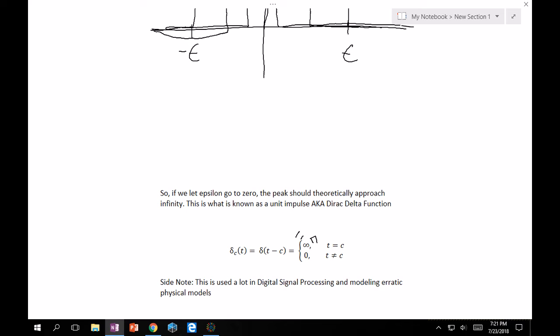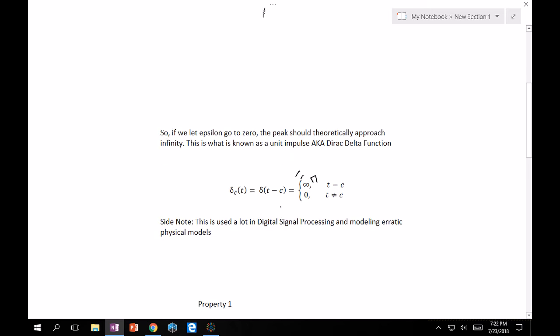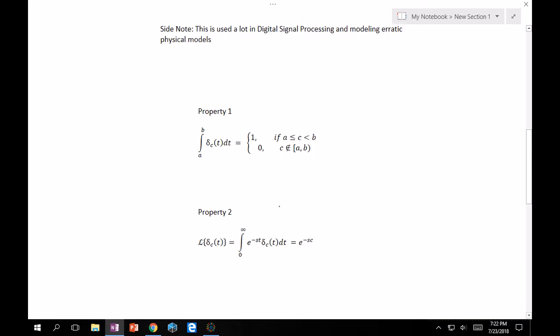So you might be wondering what the applications are for this. I can tell you right now from experience, this is used a lot in digital signal processing, also known as DSP, and modeling highly erratic physical models. It's velocity, and I believe things like momentum and acceleration, they don't exactly correspond to one another. Like you can have a unit impulse of moving a mass, just striking it immediately, and you need to model it with a Dirac delta. So it can lead to some pretty interesting physics as well.